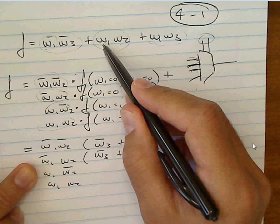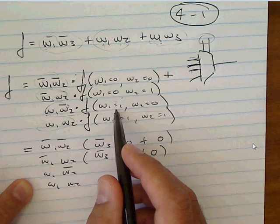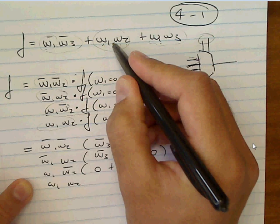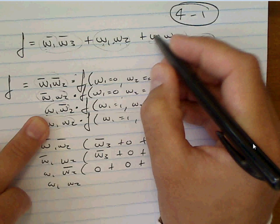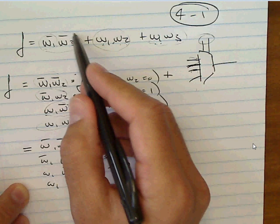For W1=1 and W2=0: the NOT W1 term becomes 0; the W1·W2 term becomes 1·0 = 0; and the W1·W3 term becomes 1·W3 = W3. So F(1,0) = W3. For W1=1 and W2=1: the NOT W1 term becomes 0; the W1·W2 term becomes 1·1 = 1; and since 1 OR anything is 1, F(1,1) = 1.